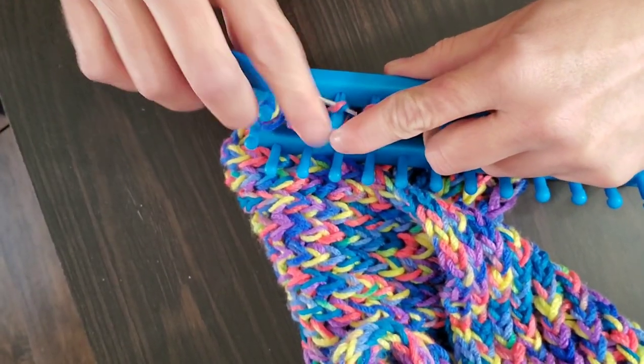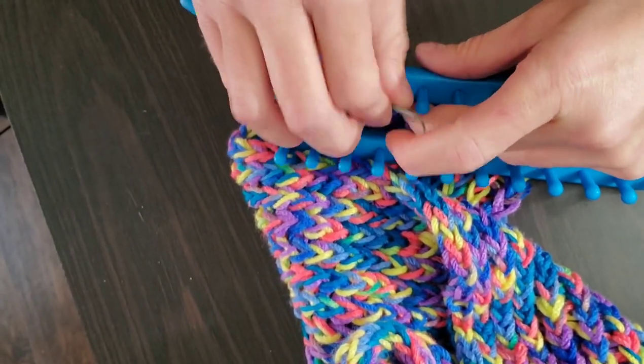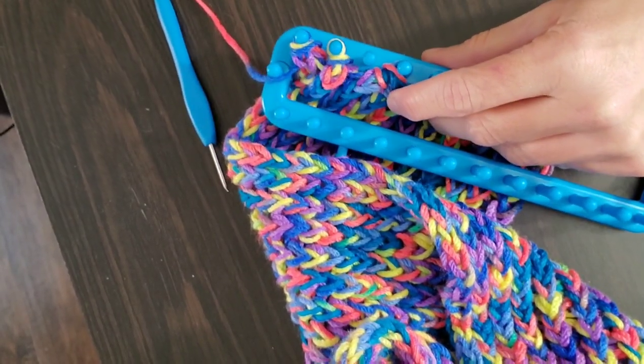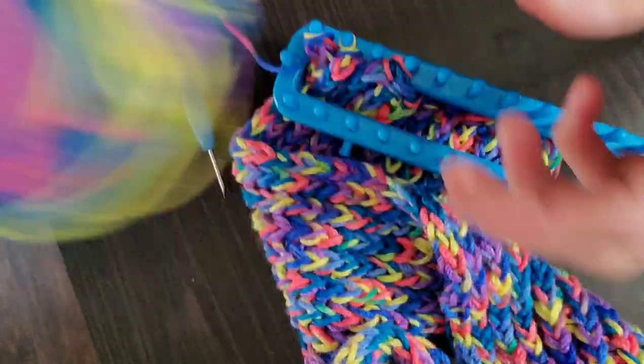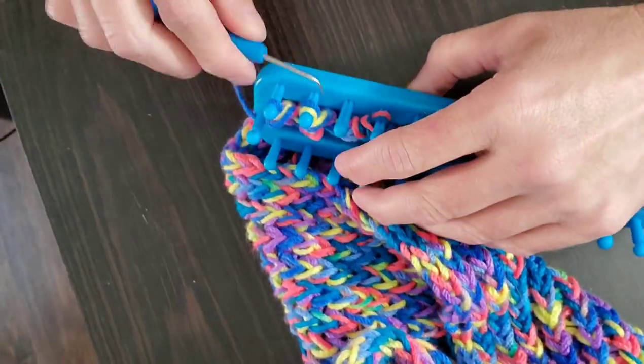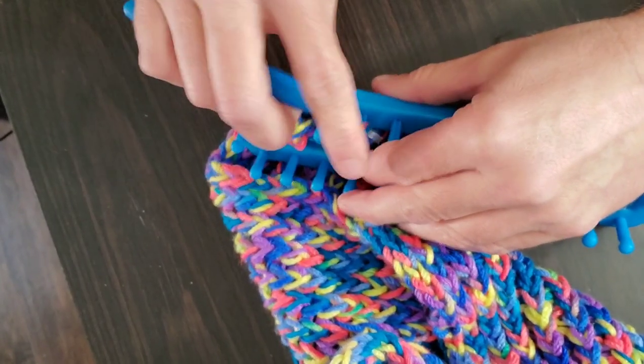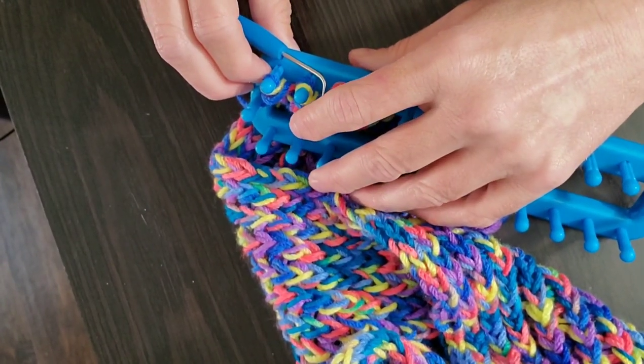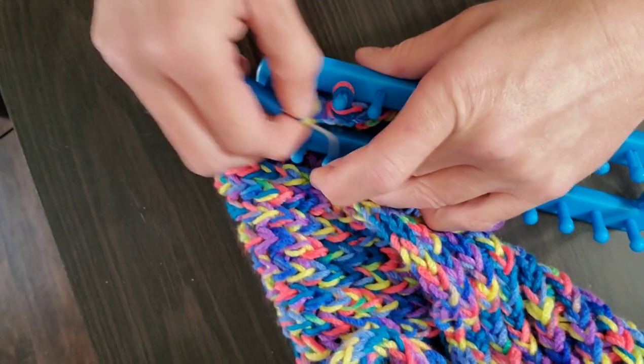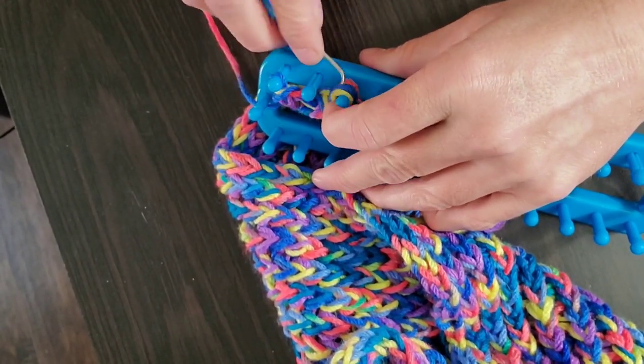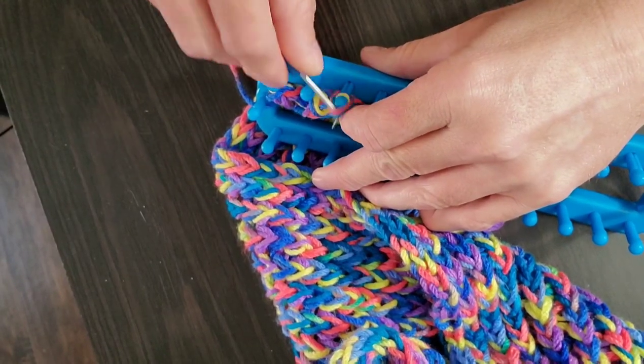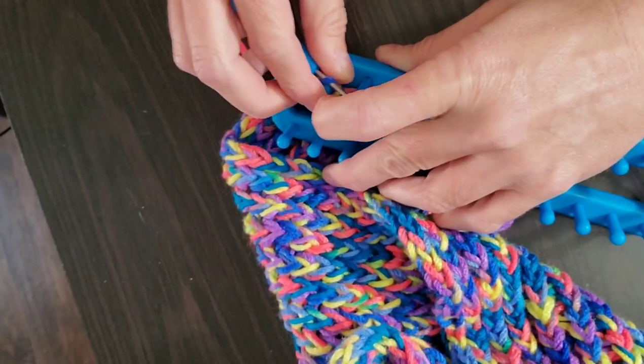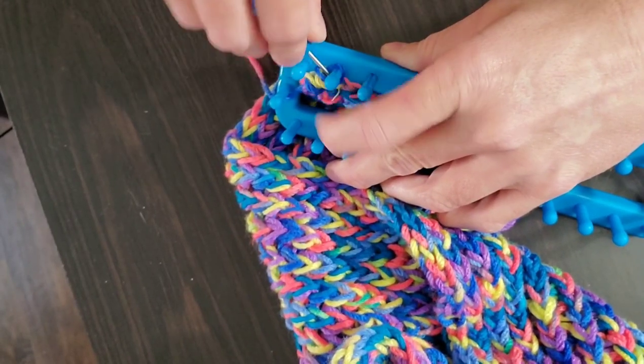Now with the length of this scarf I used the remainder of the two skeins that I had used when I made the hat and then about half of a new skein. So I think it would come out to about one and a half skeins total for the scarf and then one skein maybe for the hat. Because I used two skeins at once when I was making the hat.